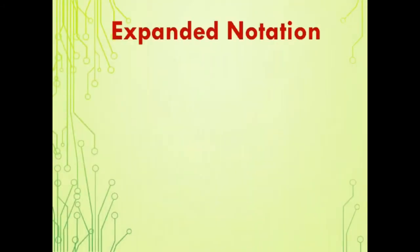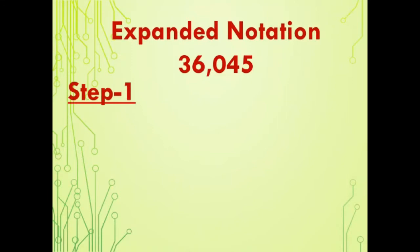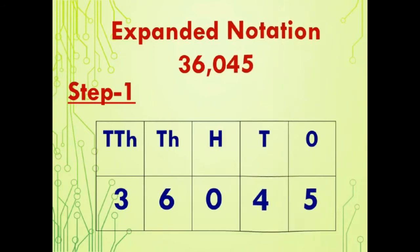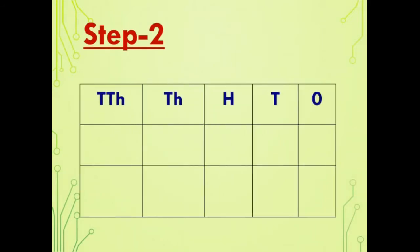Look at the number 36,045. We are representing this number by writing it in expanded notation. Step 1: We write the number 36,045 in a place value chart as: 3 in ten-thousands place, 6 in thousands place, 0 in hundreds place, 4 in tens place, and 5 in ones place.